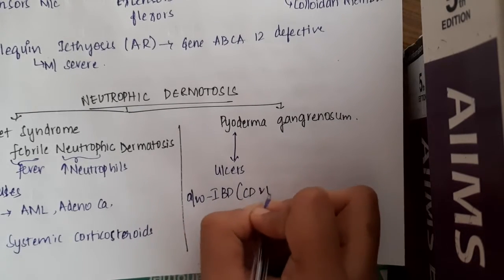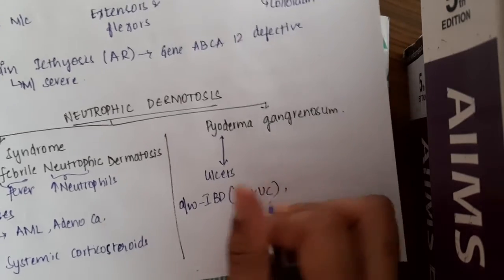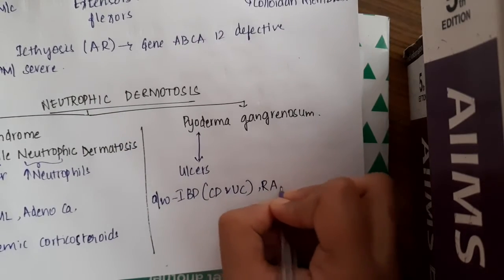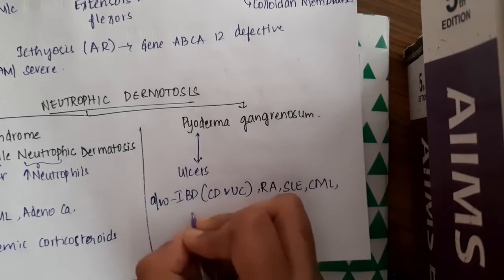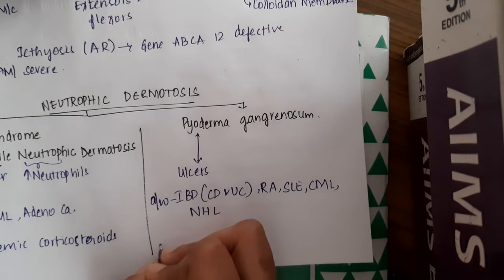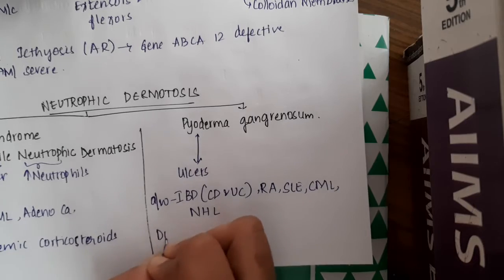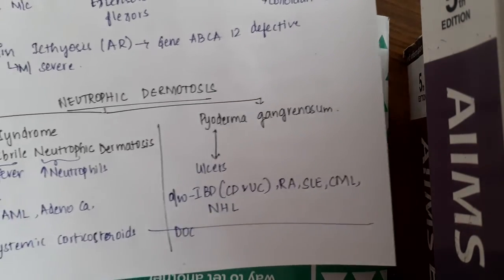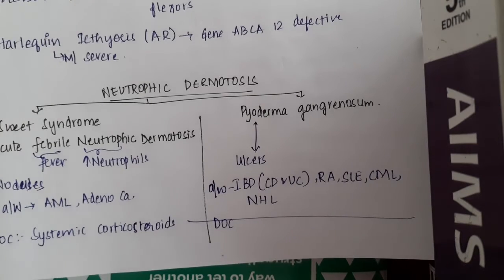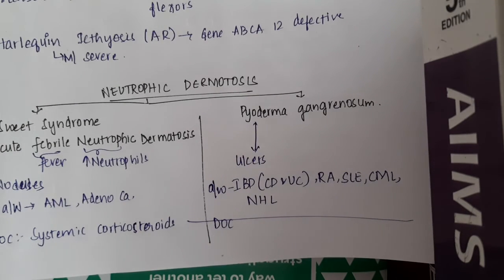Pyoderma gangrenosum is associated with inflammatory bowel disease — which includes Crohn's disease and ulcerative colitis — as well as rheumatoid arthritis, SLE, chronic myeloid leukemia, and non-Hodgkin's lymphoma. The drug of choice here is also systemic corticosteroids. So these are the differences between the two types of neutrophilic dermatosis: Sweet syndrome and pyoderma gangrenosum.